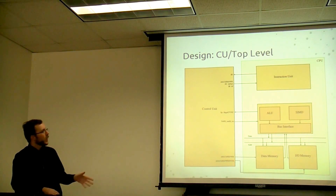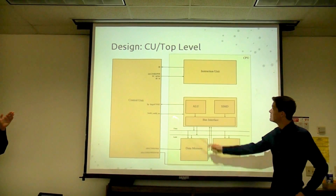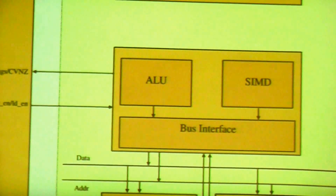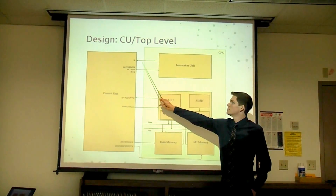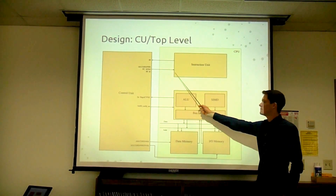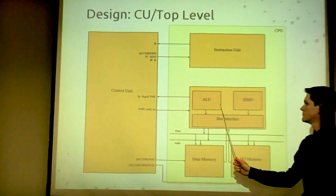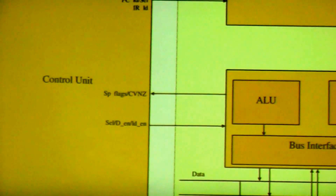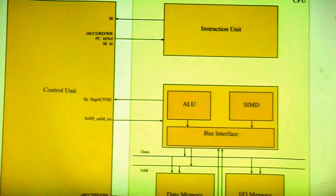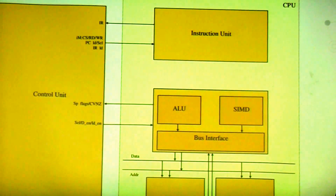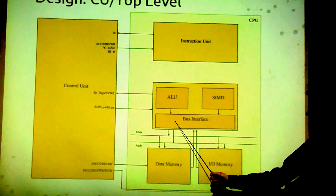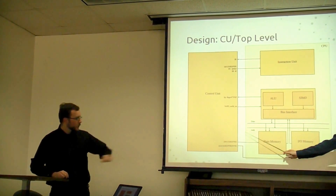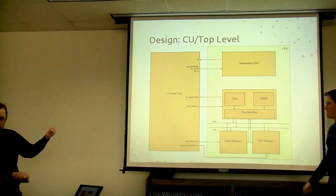This is our top-level design. The control unit talks to the instruction unit, the data path, and the IO and data memories. From the instruction unit comes back the IR, which the control unit needs to know what states to go to. In turn it outputs chip selects, reads, writes, and load enables. Flags are sent back to the control unit from the data path. There's also a bus interface — more of an array of wires and multiplexers allowing transactions on common data address lines. The interrupt at the bottom goes to IO memory and is maskable via the interrupt enable.